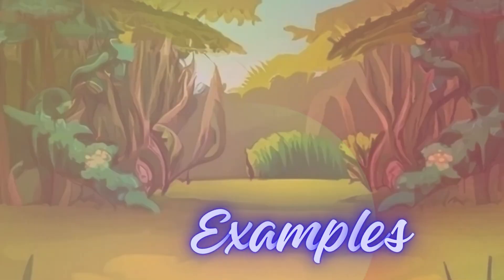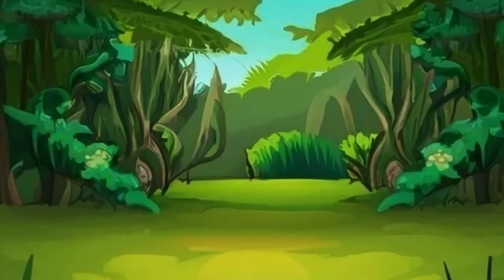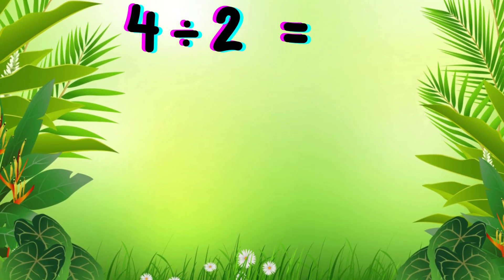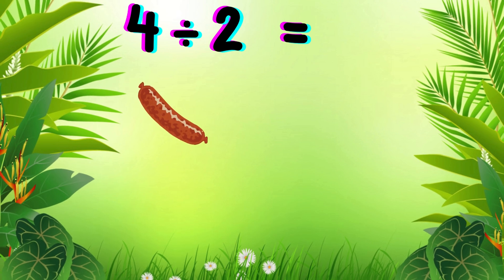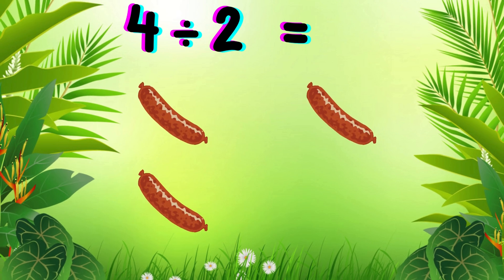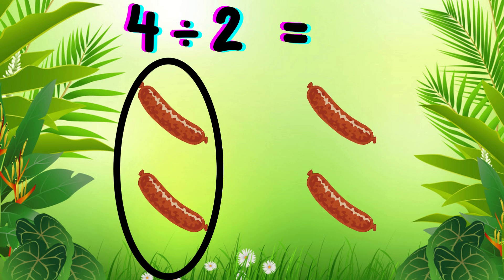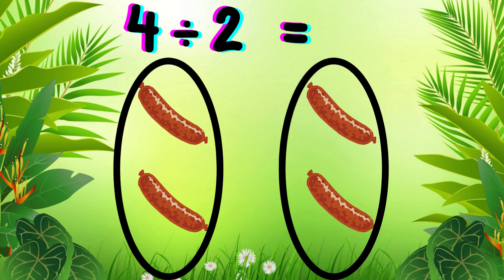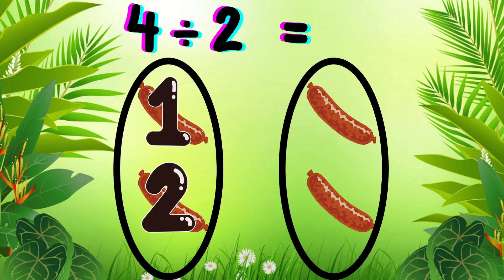Let's do other examples. Four divided by two — let's count four sausages: one, two, three, four. Now we'll split the sausages into two equal groups: one, two. Let's count how many sausages are in each group: one, two. This means four divided by two is two.